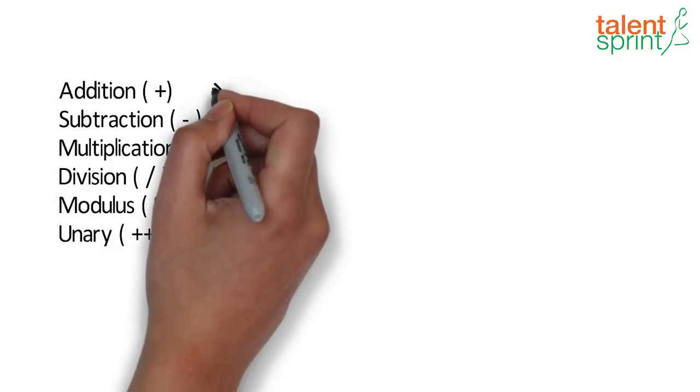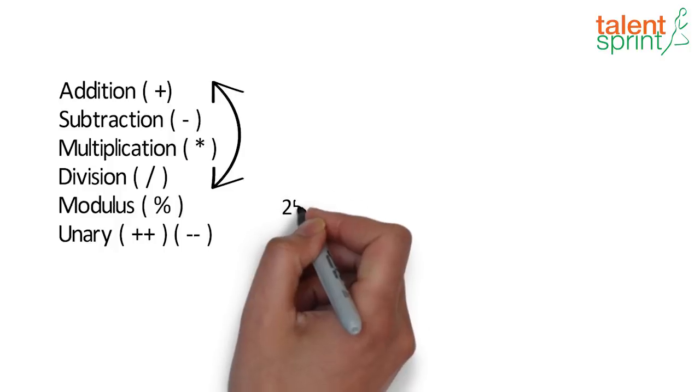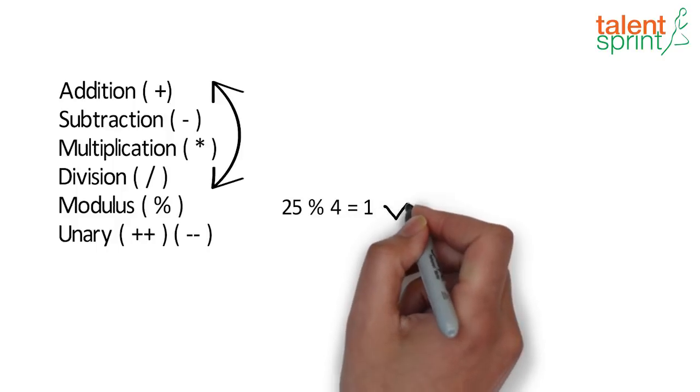The first four operators are exactly similar to everyday mathematics. Modulus operator is used to find the remainder, for example 25 modulus 4 gives 1 as the output when 25 is divided by 4.